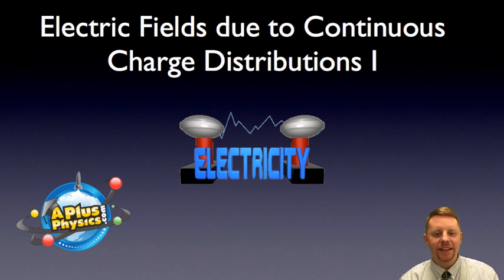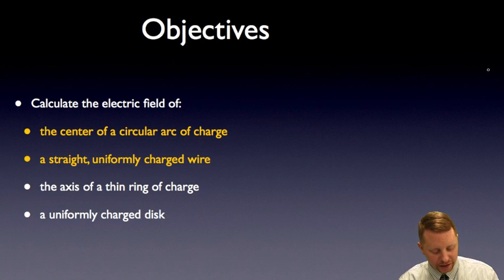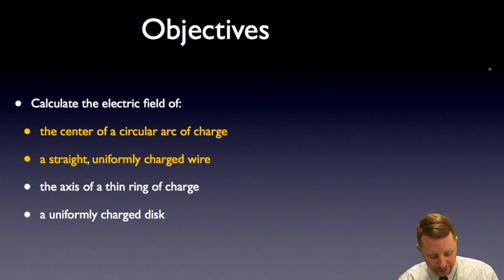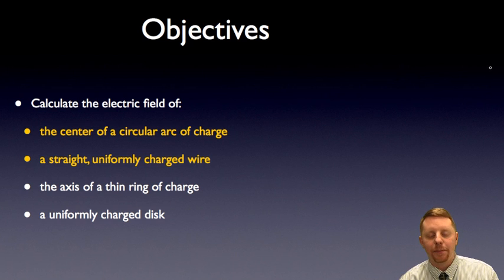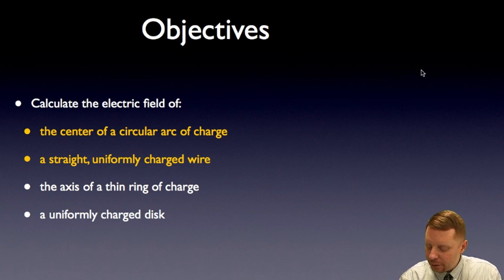Hi everyone, I'm Dan Fullerton, and today I want to talk to you about electric fields due to charge distributions. Our goals today are going to be to calculate the electric field at the center of a circular arc of charge, the electric field due to a thin straight insulating wire, the electric field on the axis of a thin ring of charge, and the electric field due to a thin disk of charge. Because this could get pretty lengthy, we're going to break this up into two separate videos. The first will cover the circular arc and the uniformly charged wire, and then the next will cover the thin ring of charge and the uniformly charged disk. So with that, let's dive in.